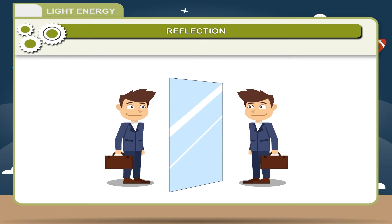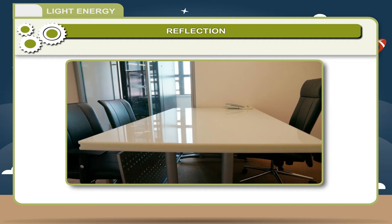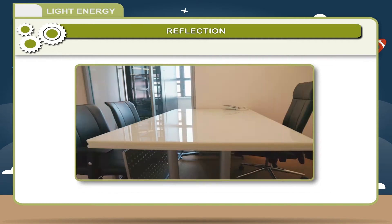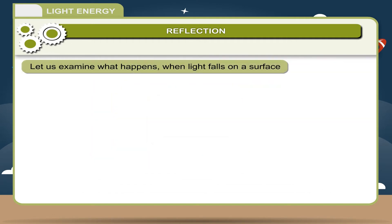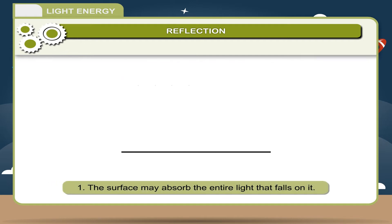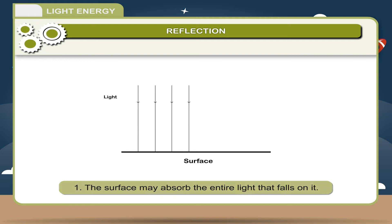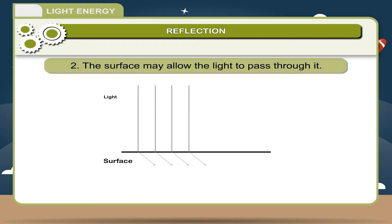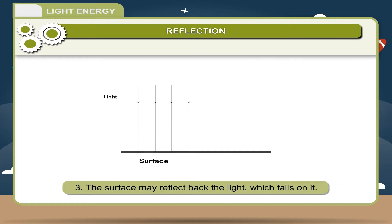Let us examine what happens when light falls on a surface. One: the surface may absorb the entire light that falls on it. Two: the surface may allow the light to pass through it. Three: the surface may reflect back the light which falls on it.